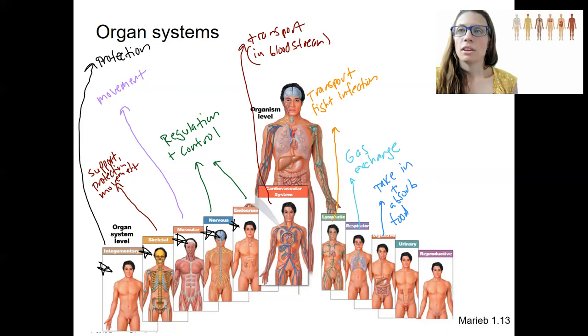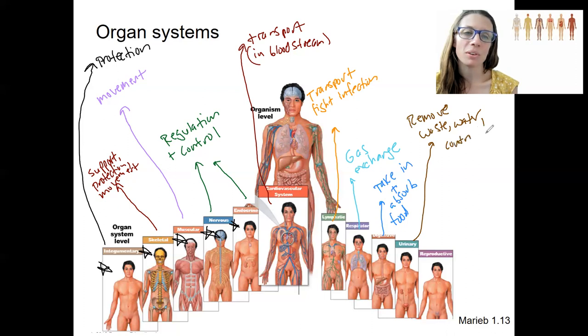Urinary is a waste excretion system. So removing waste. Also water, which isn't really a waste, but we want to be able to remove it as needed. Controls pH, so acid-base balance. This also has been really important for regulating blood pressure, because that water piece. And this will be a big topic in the spring.